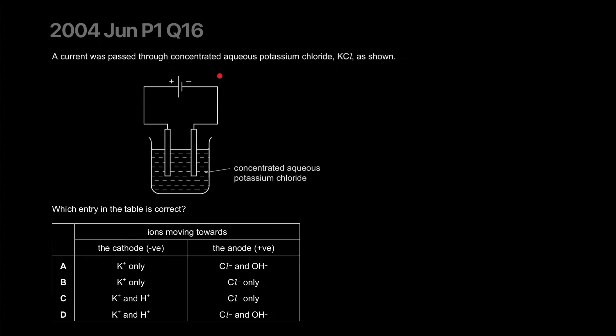A current was passed through concentrated aqueous potassium chloride. There will be two things discharging, one at the cathode and the other at the anode. The competition at the cathode is the cations which are potassium ion and the hydrogen ion from water. And the anode has chlorine and the hydroxide ion.